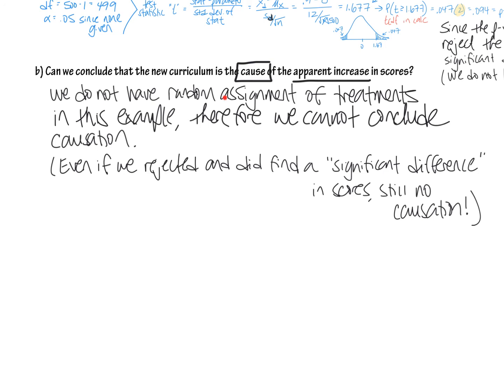We do not have random assignment. You have to have random assignment in order to have causation. That's from chapter four. We did not randomly assign anything in this scenario. Therefore, we absolutely cannot use that word cause.